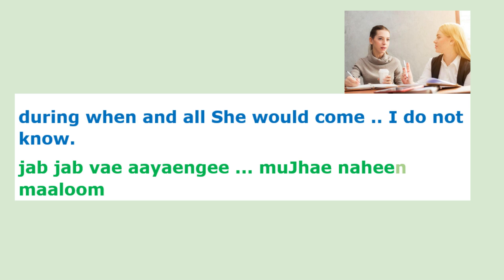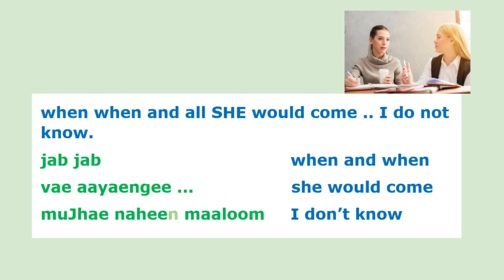During when and all she would come, I do not know. Jab jab means the different times it implies — when and when, or when and all. She may come on Mondays and Fridays, or Thursdays and Sundays — you don't know. Jab jab — when and when. Woh aayengi — she would come? Mujhe nahi malum — I don't know. That is fairly simple for you to understand.